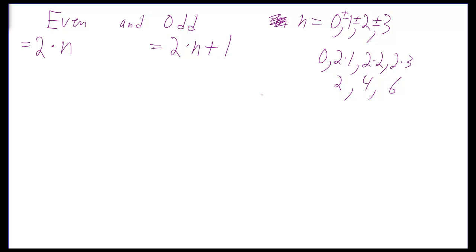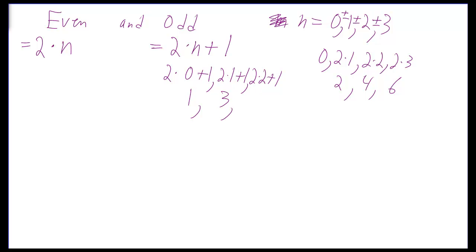What about an odd number? Well, an odd number is 2 times 0 plus 1, 2 times 1 plus 1, 2 times 2 plus 1. What are these numbers? Well, 2 times 0 is 0, plus 1 is 1. 2 times 1 is 2, plus 1 is 3. 2 times 2 plus 1 is 5. And so on.